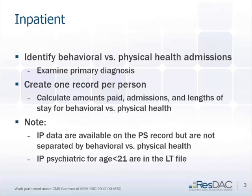Some inpatient datasets have flags for whether an admission was scheduled versus emergent, but MAX doesn't have any flag like that. You'd have to develop your own algorithm depending on what the condition was — saying these conditions are emergency and these are not. There's also the concept of avoidable admissions, where you look for admissions associated with certain diagnoses — hypertension, diabetes, asthma — and say those are potentially avoidable with better primary care. So places with high rates of admissions for diabetes may need to do more work.